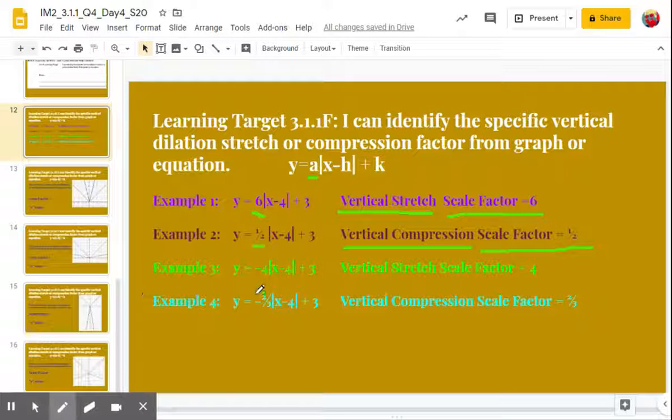Example three, our A value is negative four. But we're going to say our scale factor is four. The negative sign tells us that it reflects over the X axis, so we know that it's going to open down. The scale factor is actually four, and this one will have a vertical stretch. And our last example, Y equals negative two-thirds absolute value X minus four plus three. The A value is negative two-thirds. Our scale factor is two-thirds. Again, that's between zero and one, so that means it has a vertical compression.